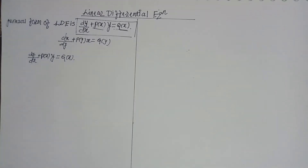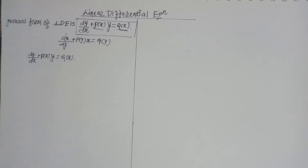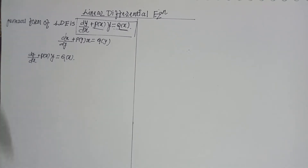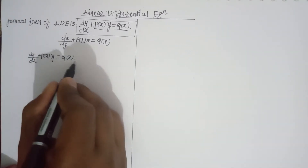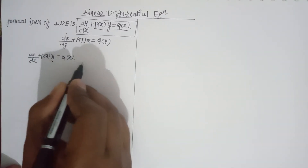We learned in the previous video about variables and separables. Now for this linear differential equation, we need to find out the general form of the solution. This is equation 1: dy/dx plus P(x)·y equals Q(x).